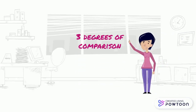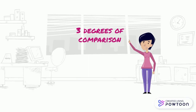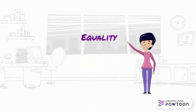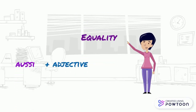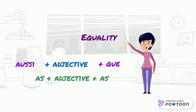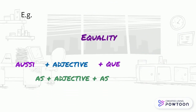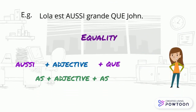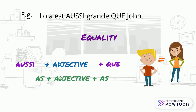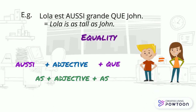There are three degrees of comparison. First of all, equality, with the structure: aussi + adjective + que — meaning 'as + adjective + as'. For instance, 'Lola est aussi grande que Jeanne' — Lola is as tall as Jeanne.